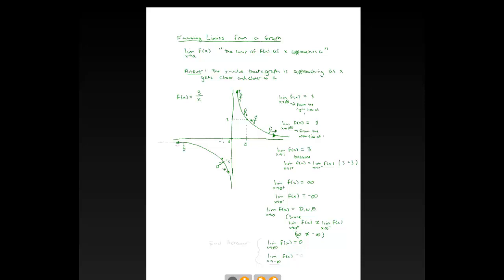Similarly, if we walk our point toward large negative x-values, because of the asymptote at y = 0, it approaches y = 0 as well. Whenever you're asked about limits as x goes to positive or negative infinity, those are called the end behavior of the function.